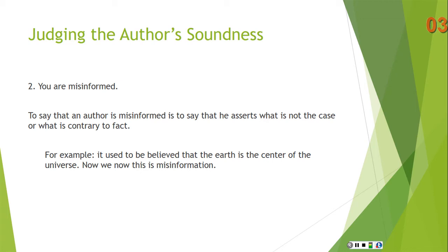Two, you might say that the author is misinformed. There's a difference between being uninformed and being misinformed. To be uninformed is to lack a bit of knowledge. To be misinformed is to believe that something false is true. So to say that an author is misinformed is to say that what he asserts is not the case or is contrary to fact. For example, it used to be believed that the Earth is the center of the universe — we now know this is misinformation. So any physics or astronomy based on a geocentric model of the universe would be a misinformed book.